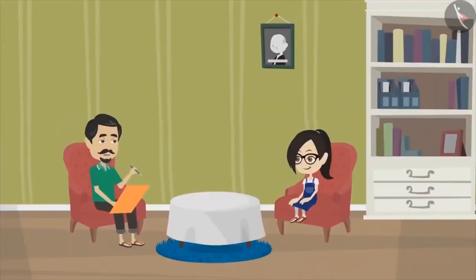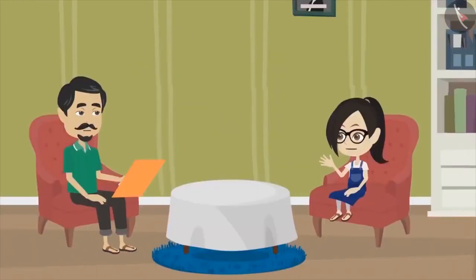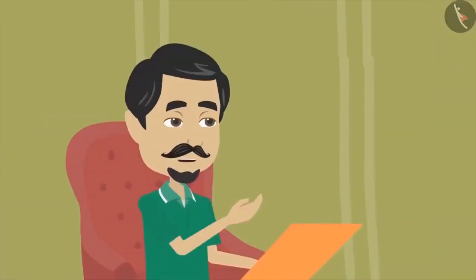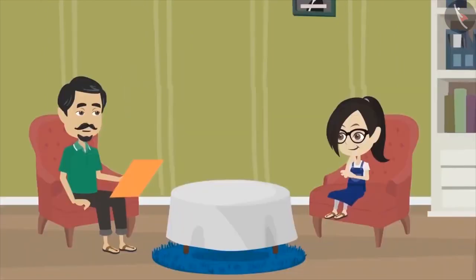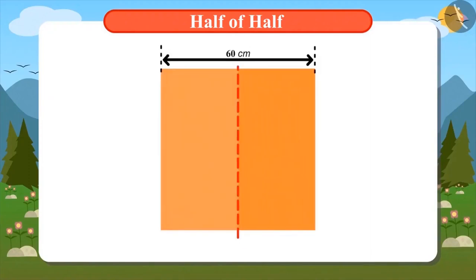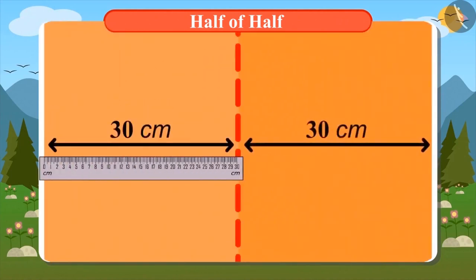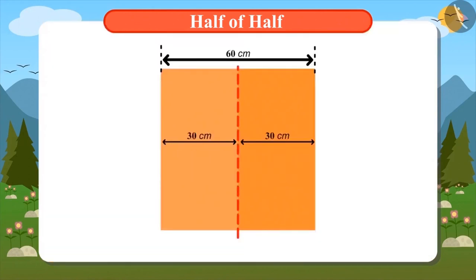Half of half? Yes. If we divide the field into half, we will get two halves. If we divide the two halves equally again, the field will be divided into four equal parts. Come, help me — then you will understand it better. Let's divide this paper by folding it into half. When we open it, the folding mark has divided the paper into two equal halves. The paper is now divided into two equal parts and each part is 30 centimeters.